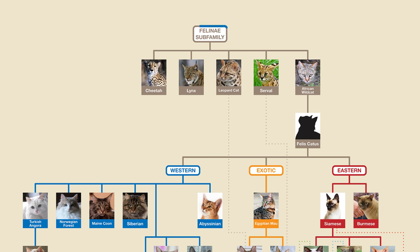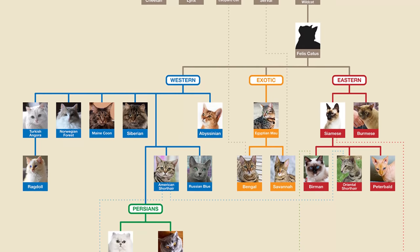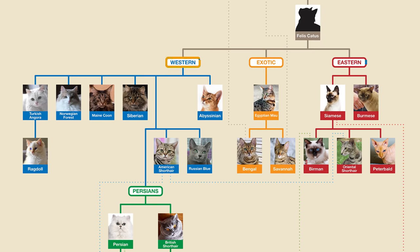Let's now switch to the family tree of smaller cats, known as the Felinae subfamily. This subfamily includes the cheetah, lynx, leopard cat, serval, and African wildcat. It was from this last species that the domestic cat evolved, probably around 10,000 years ago. The scientific name for the domestic cat species is Felis catus, and it eventually evolved in three different directions – the western branch, the eastern branch, and the exotic branch. These, along with the Persian branch which stemmed from the western branch, are the four categories that BasePaws uses for classifying cat breeds.